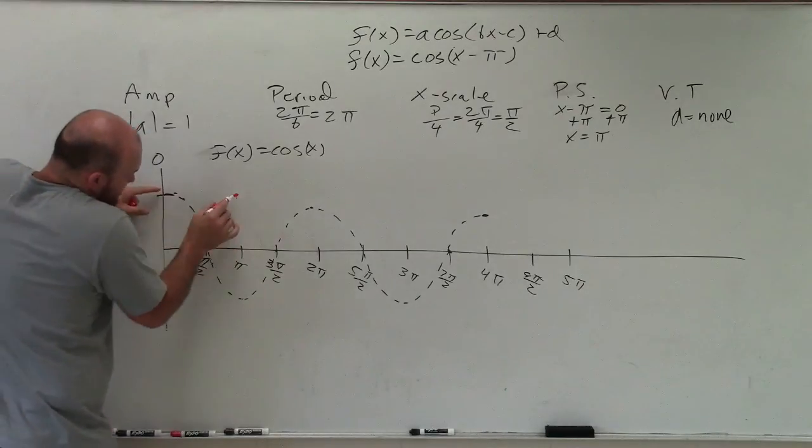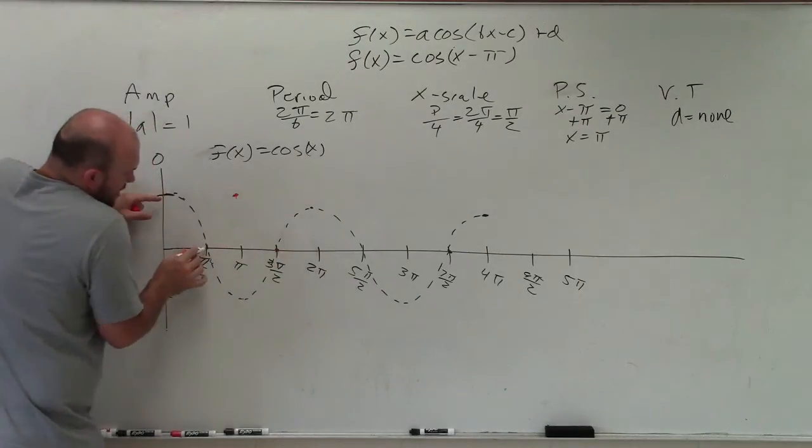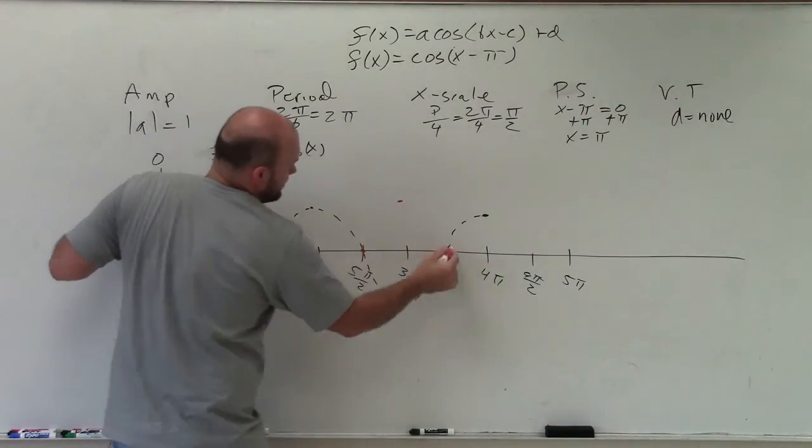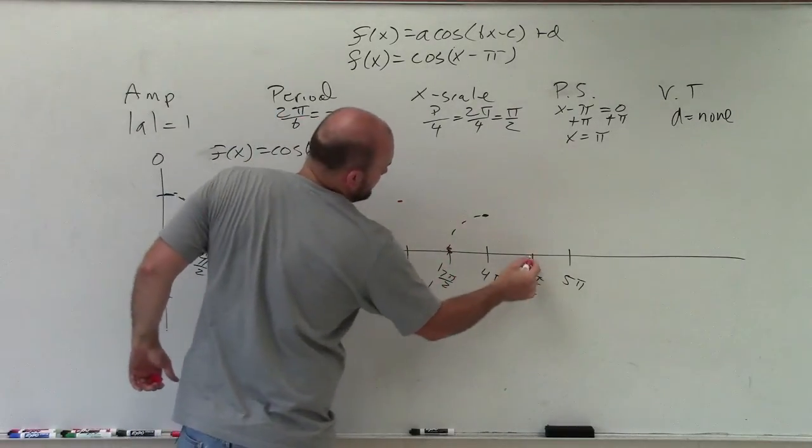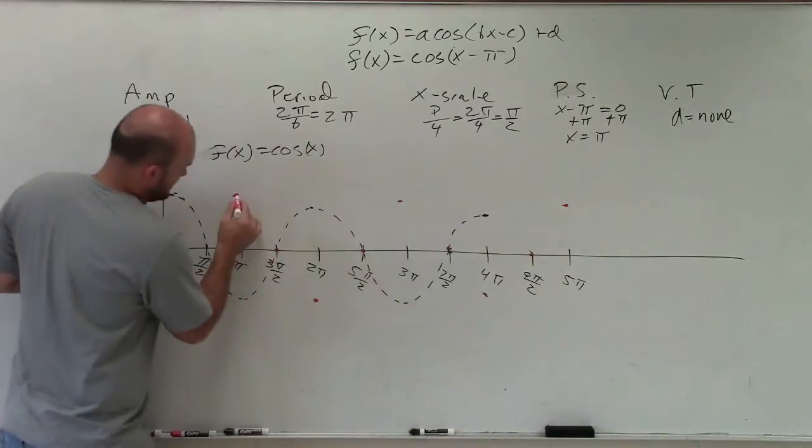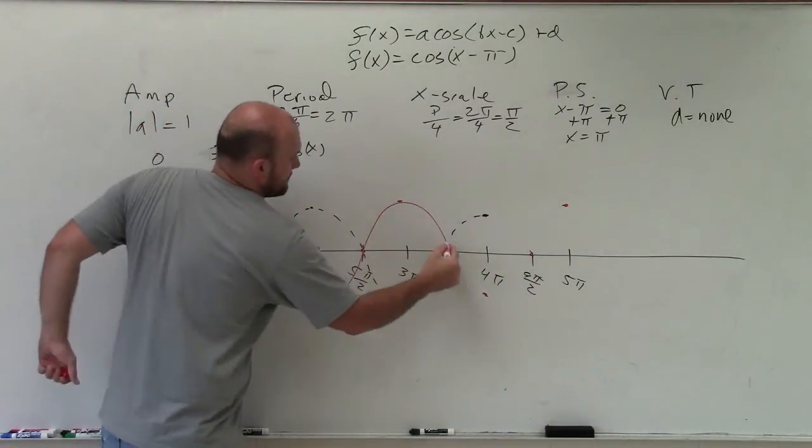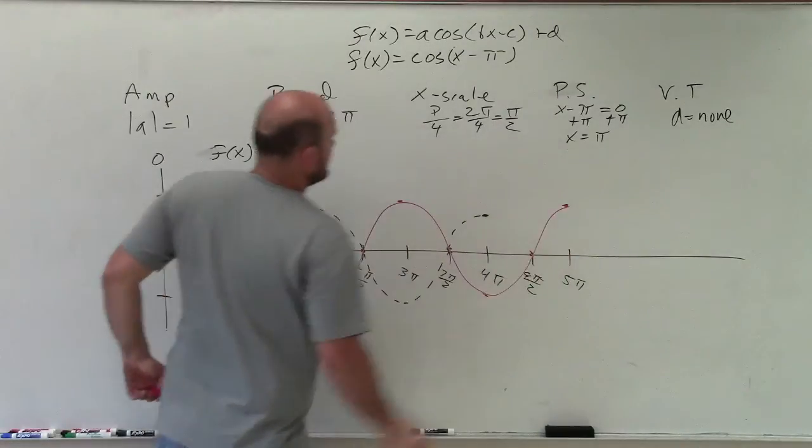So notice it goes from vertex to intercept. Intercept to minimum, to minimum. Back to vertex, back up. Minimum, vertex, minimum. Now I just connect my points.